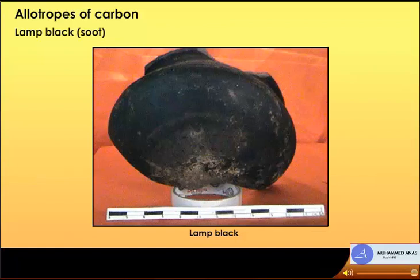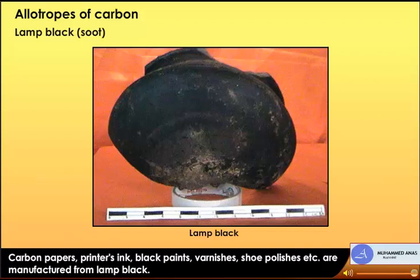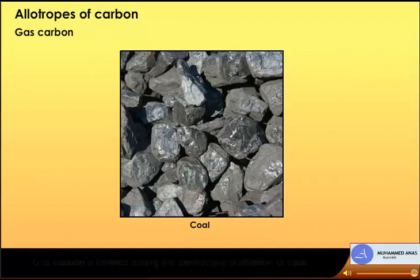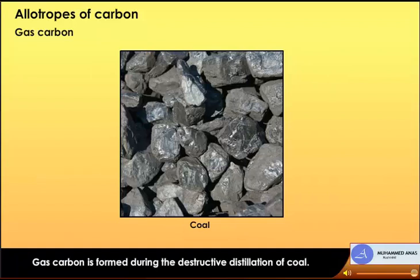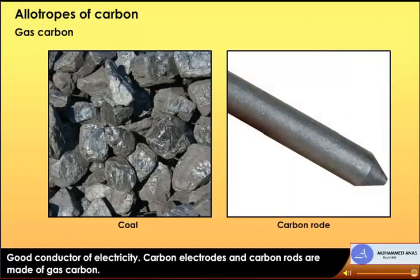Lamp black or soot is obtained by burning substances rich in carbon such as turpentine and oil. Carbon papers, printer's ink, black paints, varnishes, and shoe polishes are manufactured from lamp black. Gas carbon is formed during the destructive distillation of coal. It is a good conductor of electricity, and carbon electrodes and carbon rods are made from gas carbon.